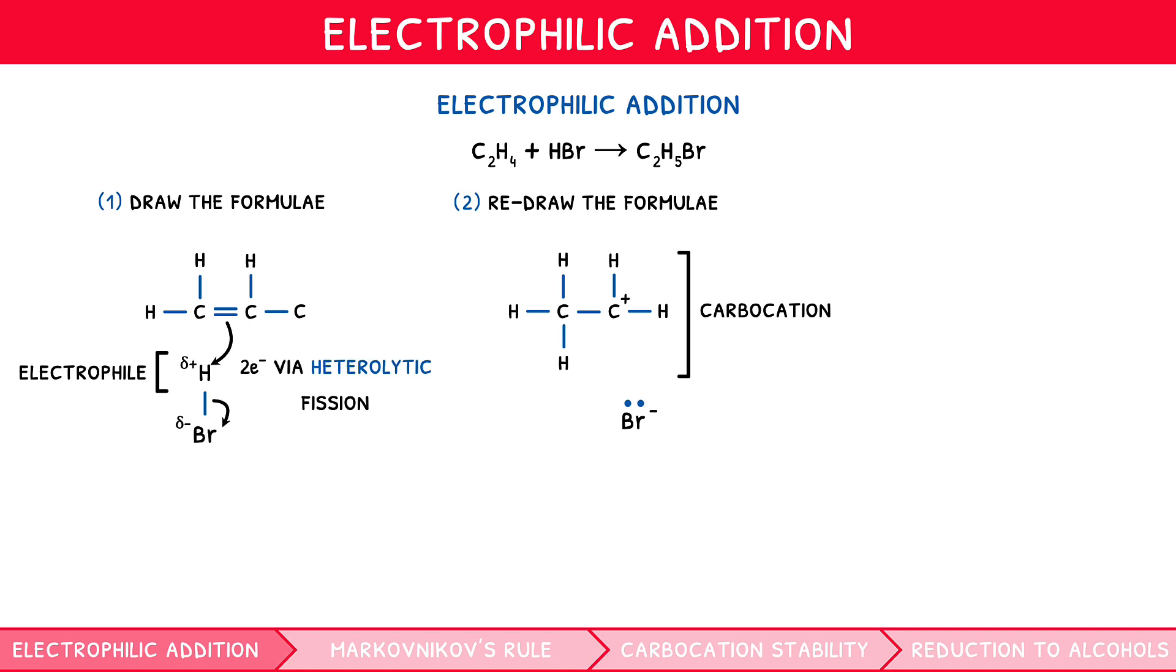The lone pair of electrons on the halide is attracted strongly to this positive carbocation, donating its electrons to form a dative bond, which we indicate once again using a double-headed curly arrow from the lone electrons to the carbocation. The third and final stage of the mechanism is to draw the completed product, here bromoethane.